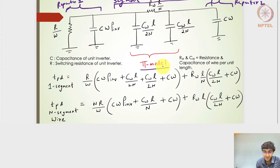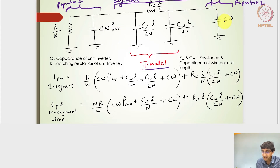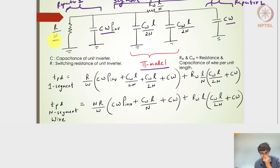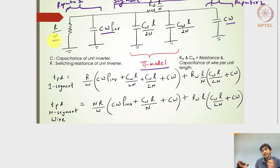Repeater number one has a switching resistance of r/w and a parasitic capacitance of cw·ρ_inv — which could be 1 or 0.5 depending on the design technology node. The input capacitance of repeater number two is cw. So we have all the capacitances and the switching resistance of repeater number one accommodated in this one segment, which starts from repeater one and ends at the input of repeater two.